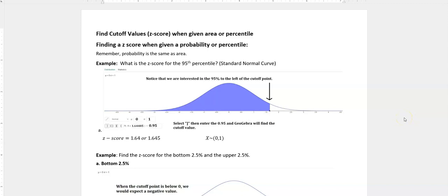Hi, it's Carly McEvoy. I'm talking about finding a cutoff score or cutoff value when you're given the probability or percentile. The probability is just that area under the curve. Remember, probability always has to add up to 1, and you can never have a probability that's greater than 1 or less than 0. It's some probability in the middle between 0 and 1.